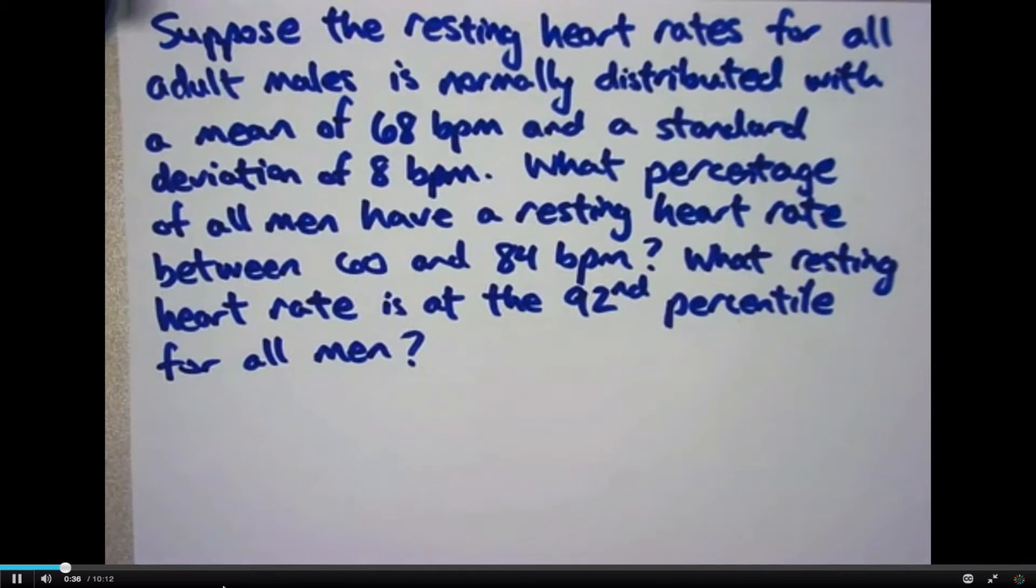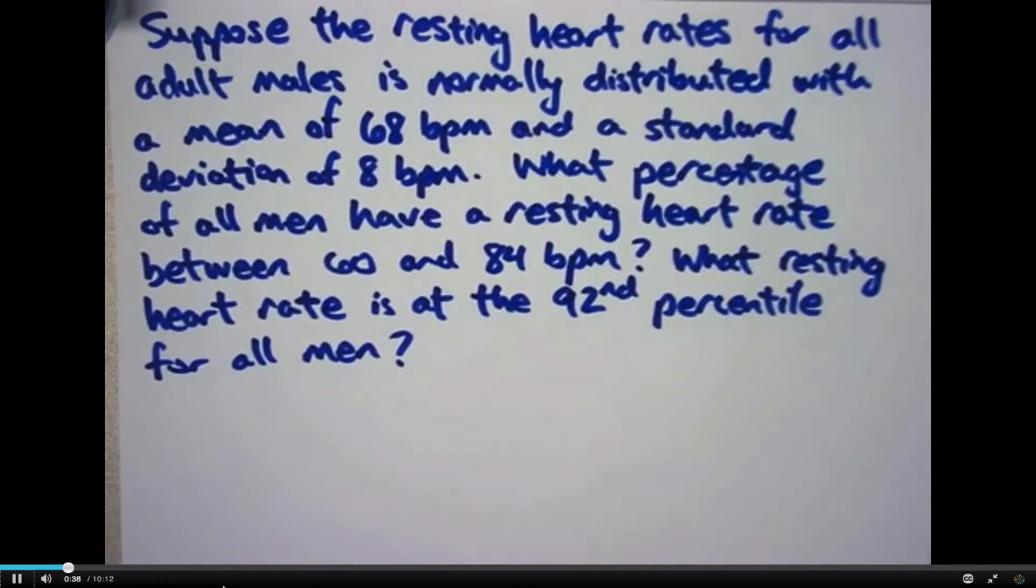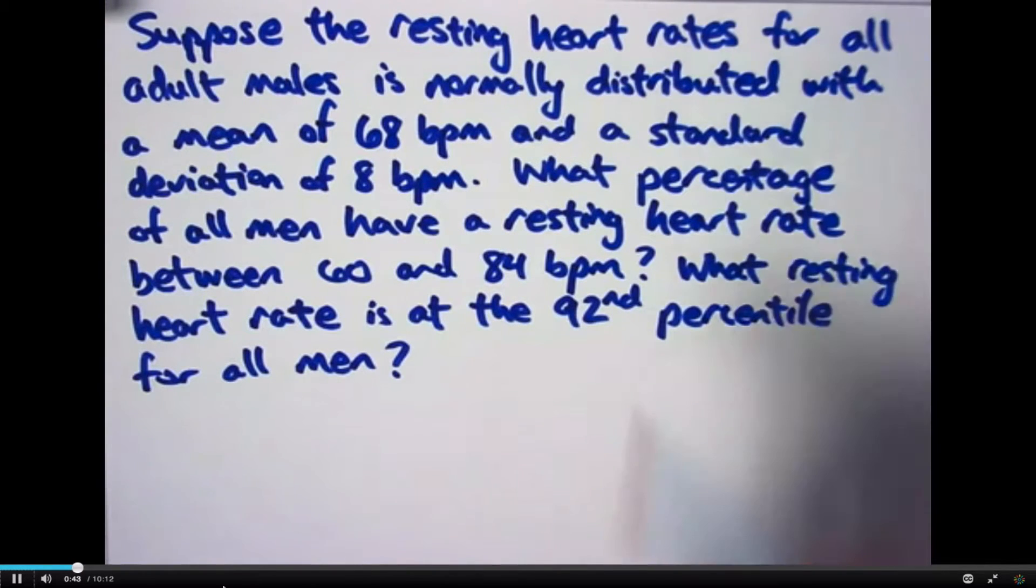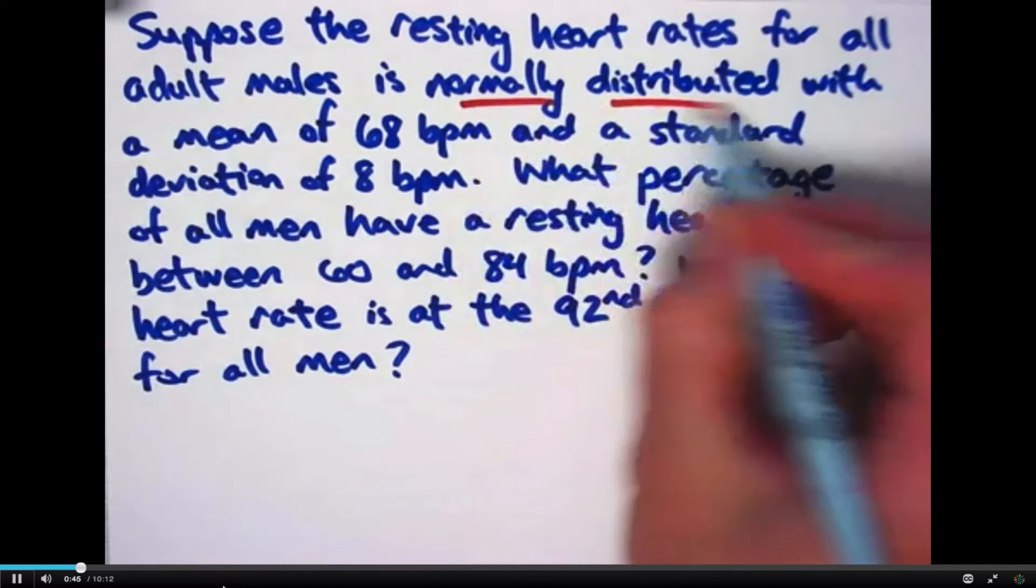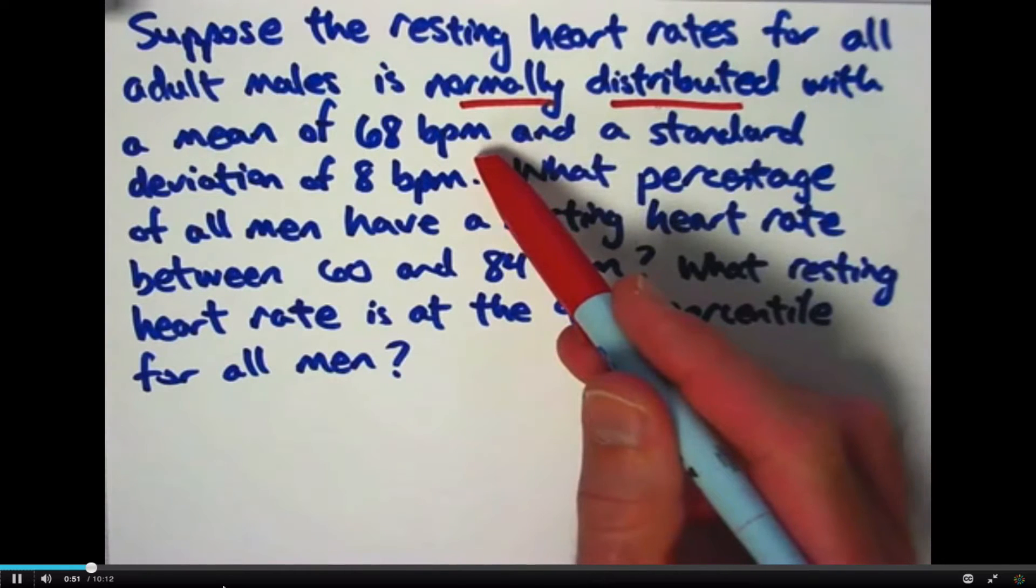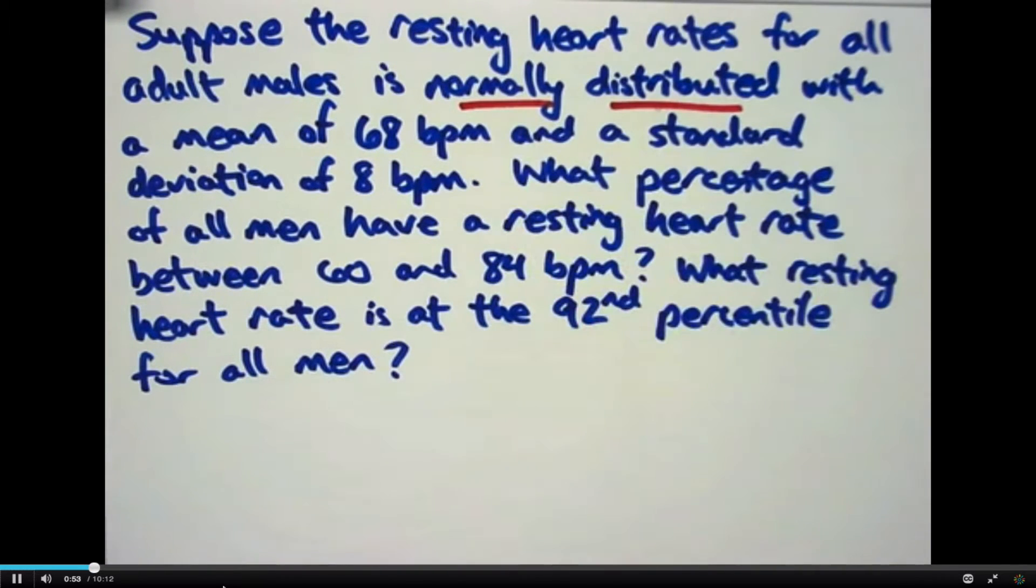So the question is, suppose the resting heart rates for all adult males is normally distributed. I haven't said what normally distributed means yet. That's what we'll talk about mostly in this video. With a mean of 68 beats per minute, BPM means beats per minute, and a standard deviation of 8 beats per minute. So I'm assuming you've learned a little bit about means and standard deviations for data. Now we're going to think of it in the context of what are called normal curves.